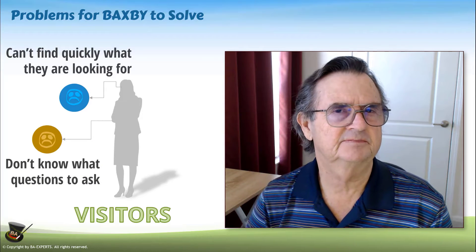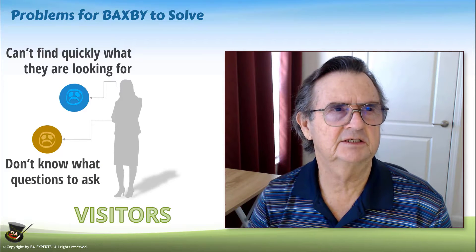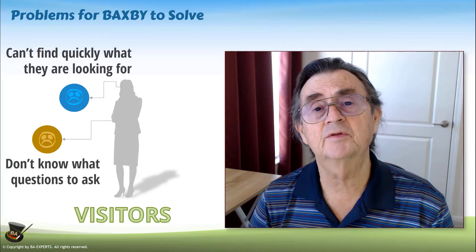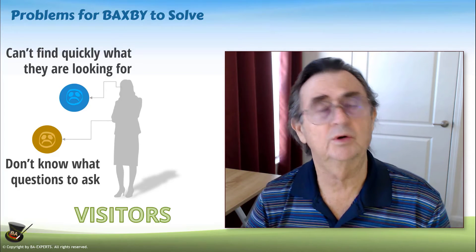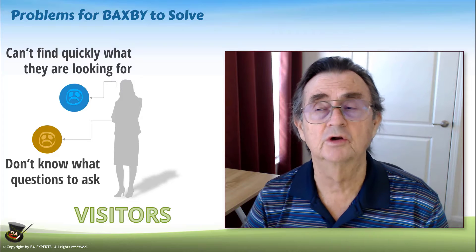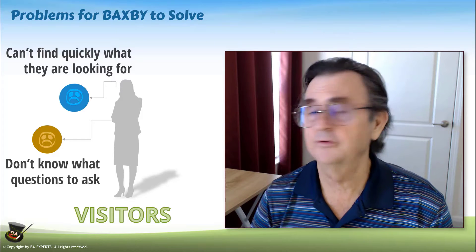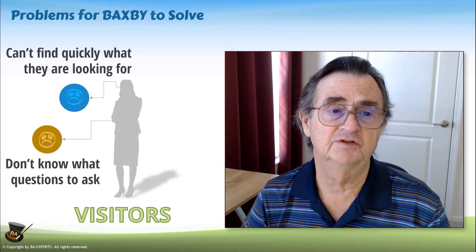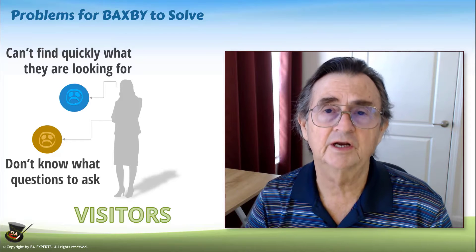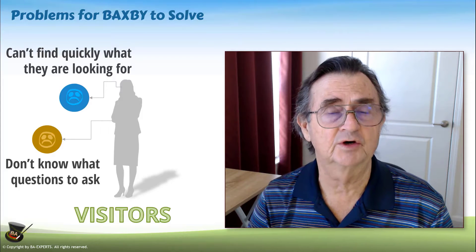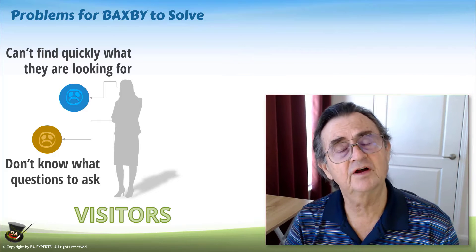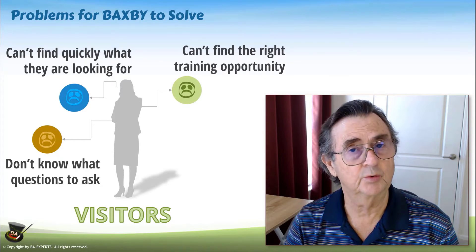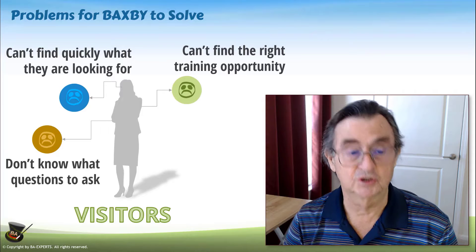They didn't know what questions to ask. This is a generic problem when looking at a website — you don't know what search terms to use in Google or what questions you should be asking to make sure you can actually achieve the goal. Because BaxBee is designed for a training organization, if users couldn't find the right training quickly, they would tend to quit and abandon the search.